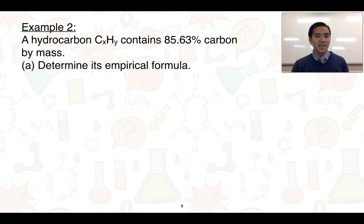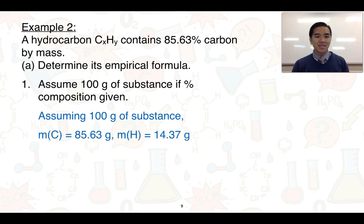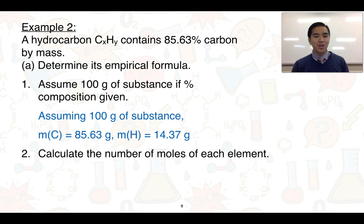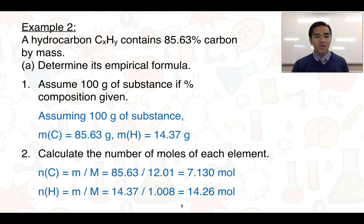Example two: we've got another hydrocarbon with just a little bit less carbon by mass. Part A — we want to determine its empirical formula, so we do this the same way. We have a percentage, so we assume 100 grams, which allows us to work out the masses of carbon and hydrogen. The next step is to calculate the number of moles of each element using mass over molar mass. For carbon, we get 7.130 mol; for hydrogen, using the same formula, we get a greater number of moles — 14.26 mol.